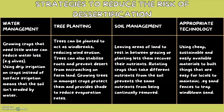The second method is tree planting. Trees can be planted to act as wind breaks, reducing wind erosion. They can also stabilise roots and prevent deserts from encroaching on farmland. Growing trees in amongst crops protects them and provides shade to reduce evaporation rates.